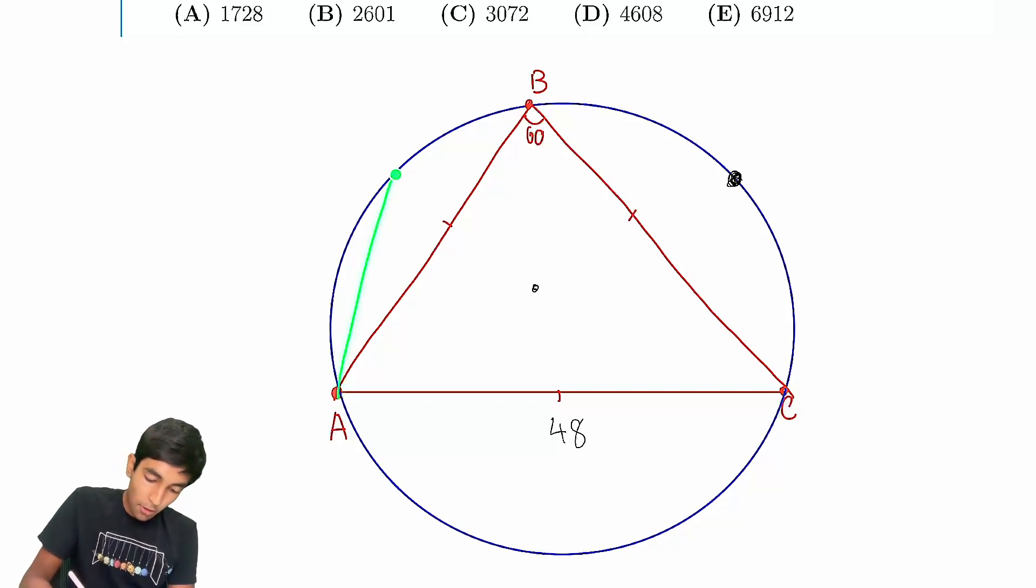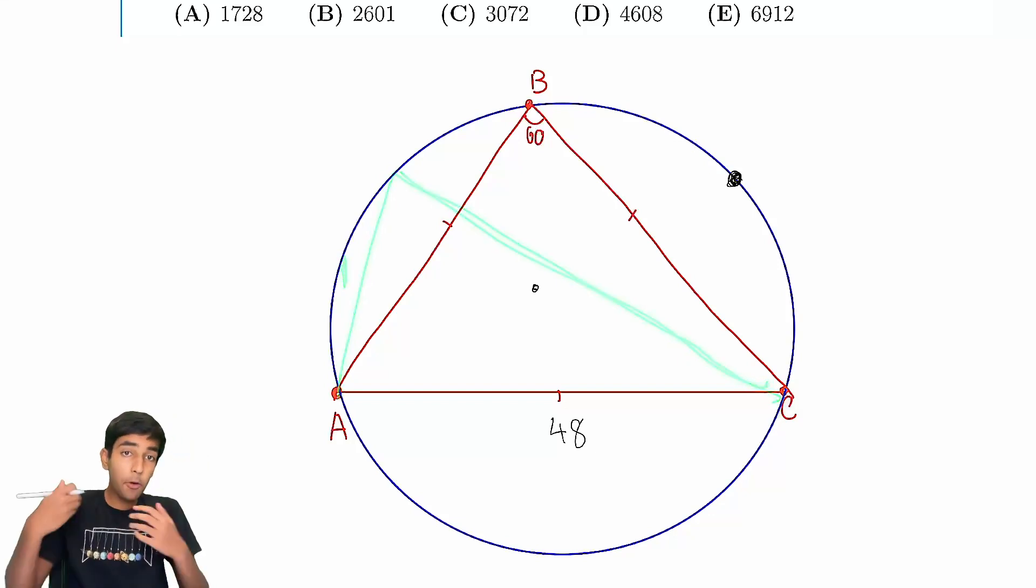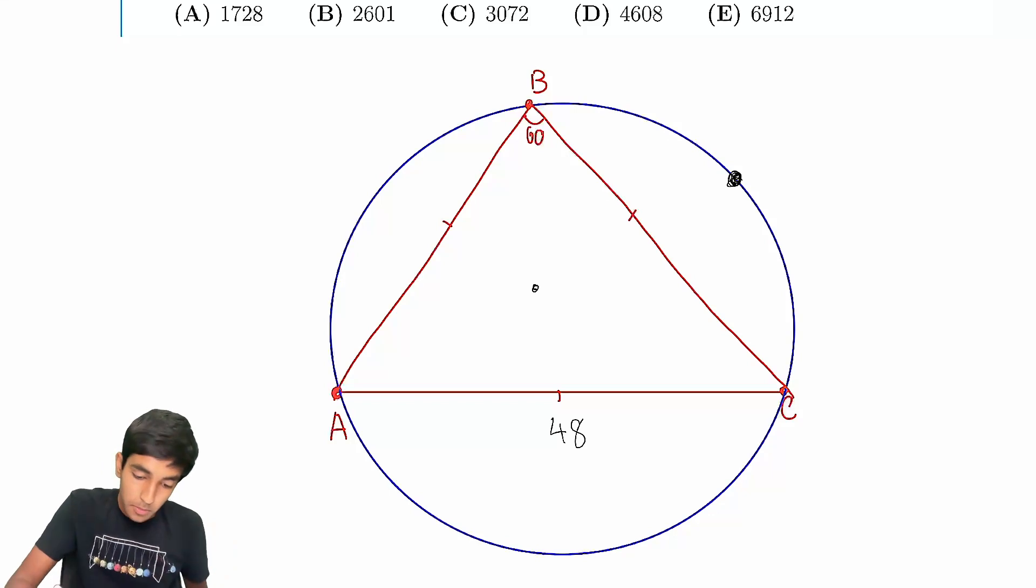Now of course we can also consider some other random triangle, where it's like, I don't know, one, and then you can calculate this length via law of cosines. Equilateral triangle is just the simplest possible thing, right? We have this is also 48, and this is also 48. So it's the simplest possible triangle location of B that could work. And the result of this is we can easily find the radius of the circumcircle of an equilateral triangle. That's not something we can do easily for other triangles. And how do we do this?